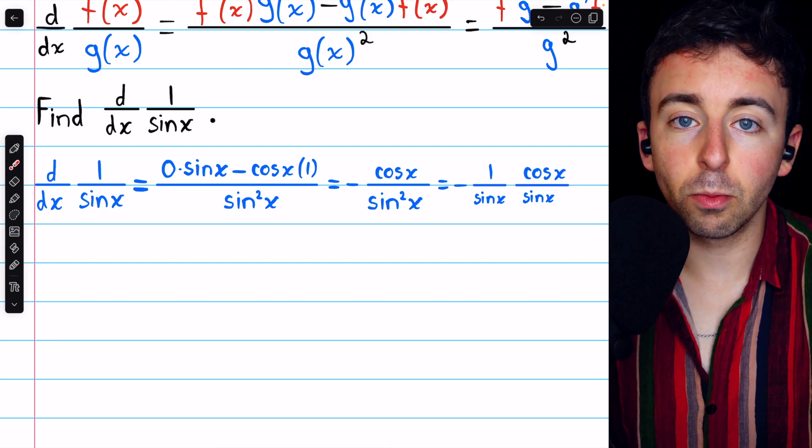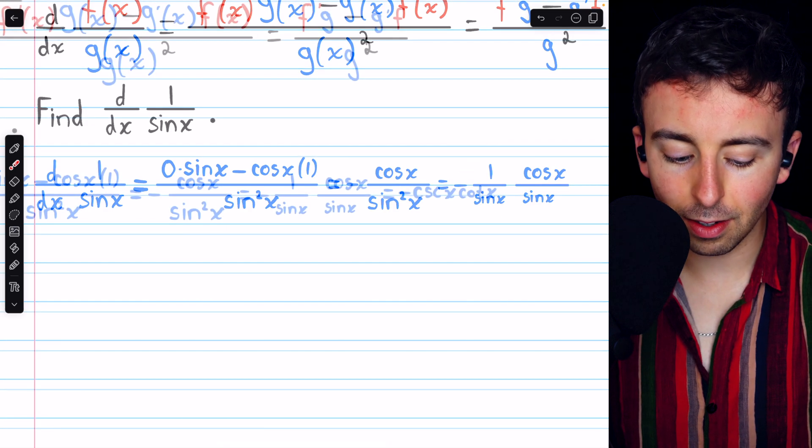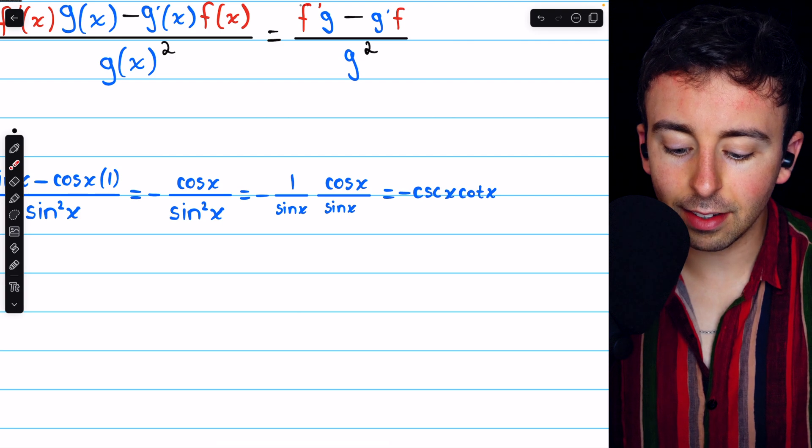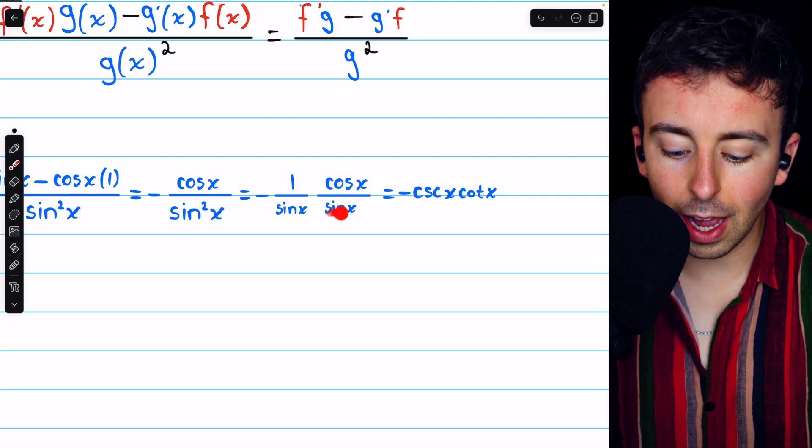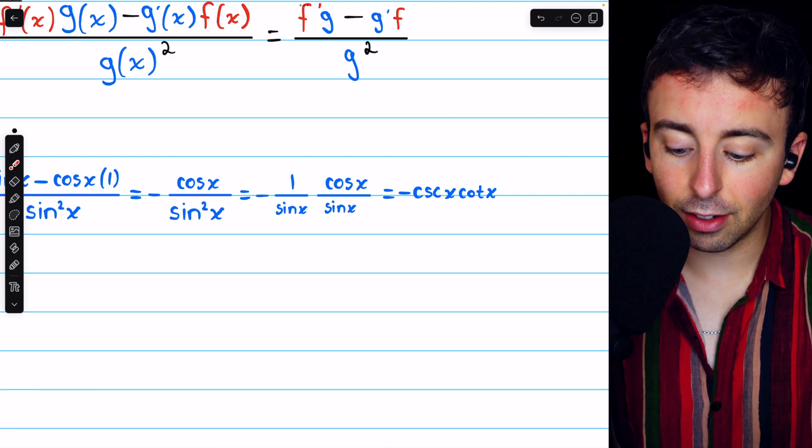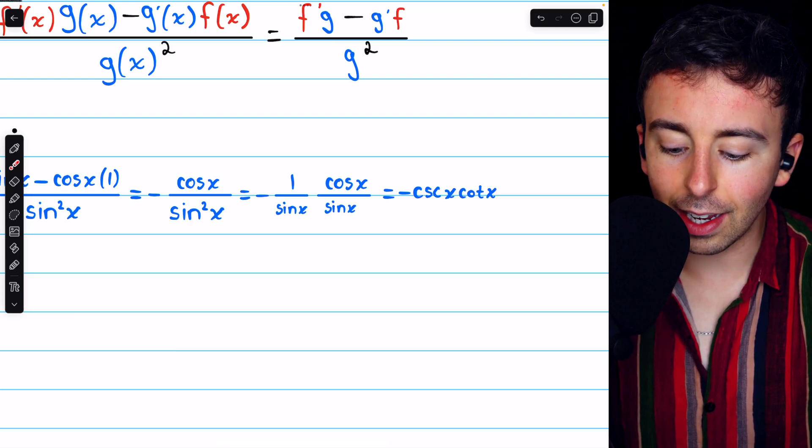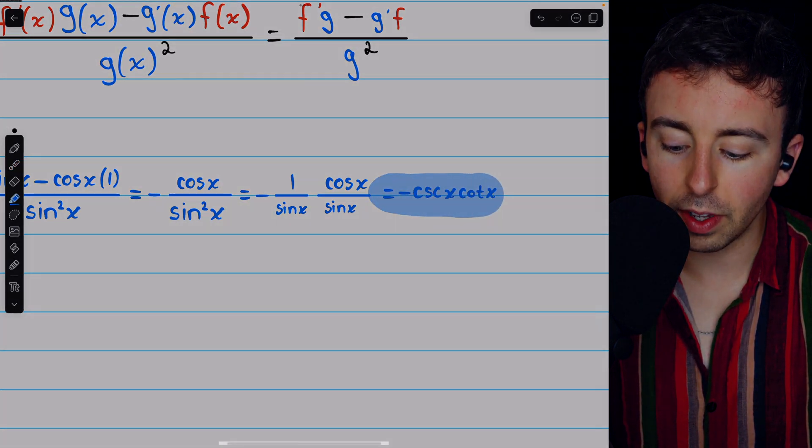Now we just apply some trig identities to rewrite this. 1 divided by sine x, like we said before, is cosecant x. And cosine x divided by sine x, that's cotangent x, the reciprocal of tangent. And don't forget the negative we have out front, and that is our derivative.